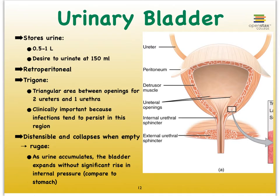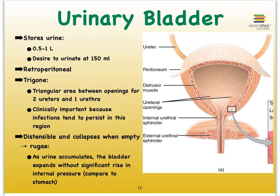The bladder is a storage unit for urine and can store about half a liter to a liter. We have the desire to urinate at a much lower volume of about 150 milliliters. The bladder is adapted for storing urine not just because of transitional epithelial tissue and smooth muscle, but also due to the presence of rugae, very similar to what we found in the stomach, allowing urine to accumulate without building up much pressure.